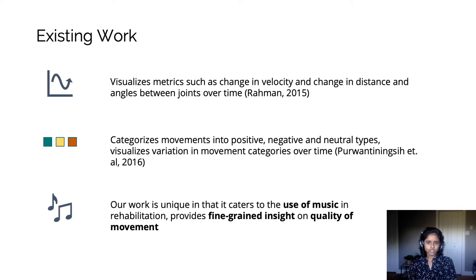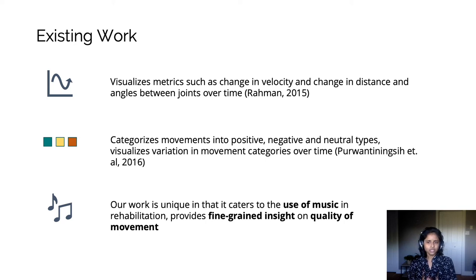Most similar visualization systems visualize metrics such as velocity over time or change in distance between joints over time. Some categorize movements into positive, negative, and neutral types and monitor the changes in movement types over sessions. Our work is unique in that it centers around rhythmic entrainment for motor rehabilitation and employs metrics which quantify consistency and smoothness of the user's actions.